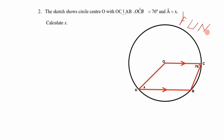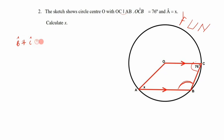There is no F or Z shape, but we can see a U forming between the parallel lines OC and AB — these are co-interior angles. Angle B + angle C = 180° because co-interior angles are supplementary.